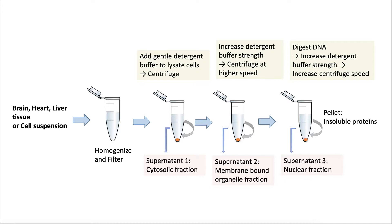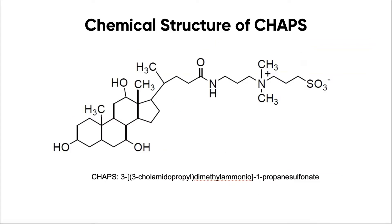CHAPS can gently and effectively break the nuclear membrane, solubilize the membrane proteins, and disrupt protein-protein interactions. CHAPS is able to protect the native state or conformation of a protein and thus can maintain the activity and function of the protein. CHAPS is a sulfobetaine derivative of cholic acid.